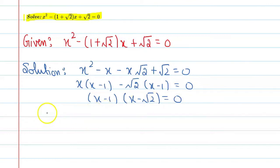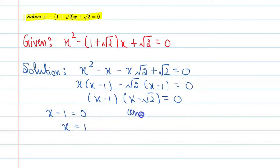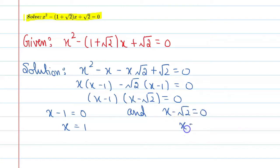From (x minus 1) equal to 0, we get x equal to 1. And from (x minus root 2) equal to 0, we get x equal to root 2.